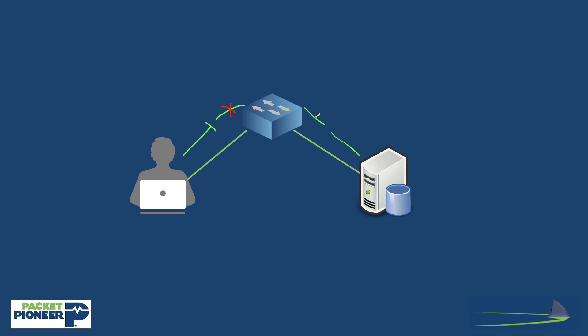Then as the next packet comes in — keep in mind, we never received the dropped one — the client is going to say: wait a second, there was a gap in sequence numbers. So it's going to generate another ACK just for this block of sequence numbers received. It's going to use that same ACK number, saying hey, I'm good to here. That's in the actual TCP acknowledgement field. But it's going to generate what's called a SACK block, basically telling the server: I'm good to here, thumbs up, and I also got these sequence numbers. But that ACK it sends to the server is going to look like a dup ACK — that's what Wireshark is going to flag it as — because we use the same ACK number in that new acknowledgement.